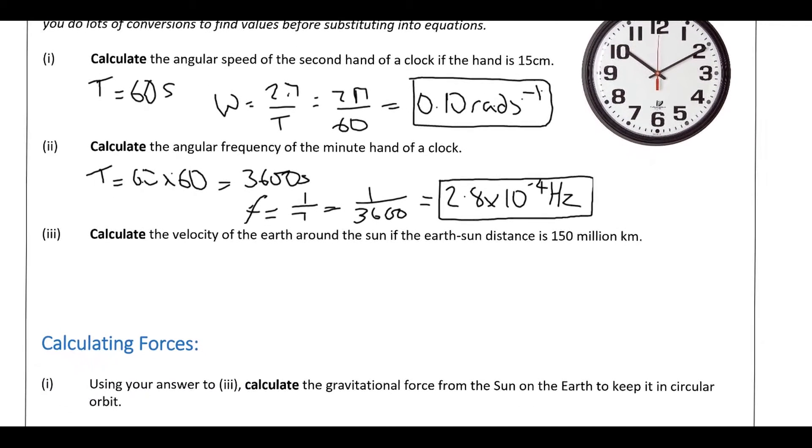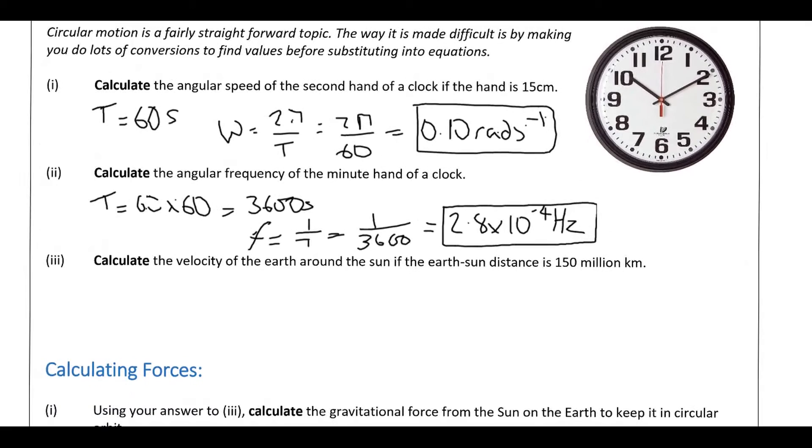So calculate the velocity of the Earth around the Sun if the Earth-Sun distance is 150 million kilometres. So the 150 million kilometres is effectively the radius of the circular motion of the Earth around the Sun. So the key thing here is actually working out what the time period is. So the time period is 1 year.